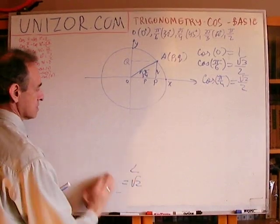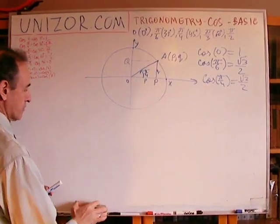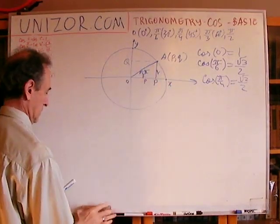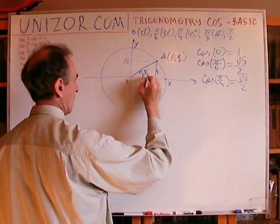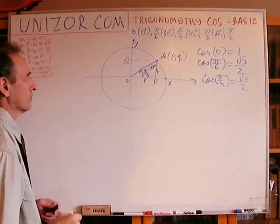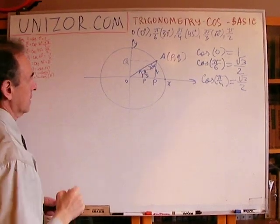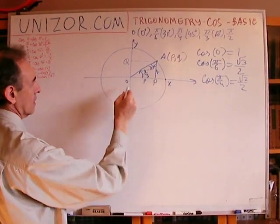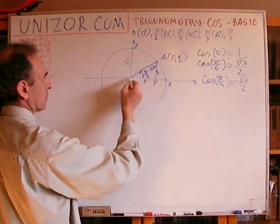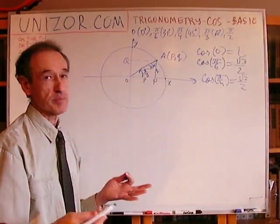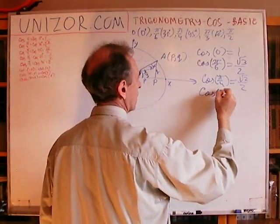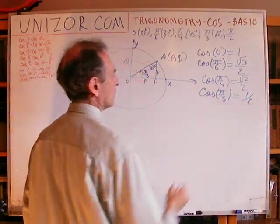Cosine of π over 4 equals square root of 2 over 2. Next, 60 degrees, π over 3. Well, if this is 60 degrees, then this is 30 degrees, π over 4. So, the opposite to 30 degrees side of this right triangle, which is actually our abscissa P, is equal to half of the hypotenuse. So, there is nothing to talk about here. We immediately have it one half.